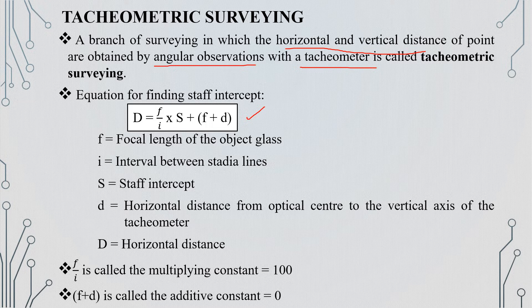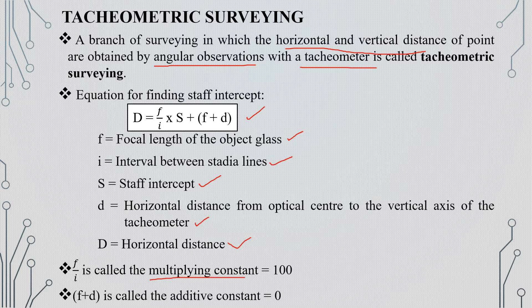F1 is the focal length of the object glass, S is the staff intercept, and d is the horizontal distance from the optical center to the vertical axis of the tacheometer. D is the horizontal distance. F1 is the multiplying constant with a value of 100. F2 is the additive constant with a value of 0.